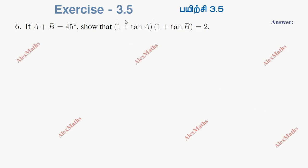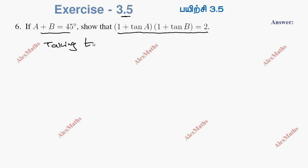Hi students, exercise 3.5, question number 6. If a plus b is equal to 45 degrees, show that 1 plus tan a into 1 plus tan b is equal to 2. If we take tan on both sides,